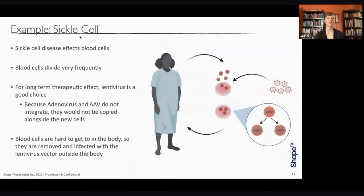An example of a disease being treated with gene therapy is sickle cell. Sickle cell is a disease that affects blood cells, which divide quite frequently, and this leads us to choose a vector where we want a long-term therapeutic effect — so lentivirus is a good choice because adenovirus and AAV don't integrate and won't be copied alongside new cells. Also, the blood cells we're trying to affect are stem cells that live in the bone marrow and can be hard to target in vivo. So with an ex vivo approach, by removing those cells, we can more easily access them in a dish and expose them to the lentiviral vector. Once these cells have their permanent changes, they're infused back into the patient for a long-term effect.